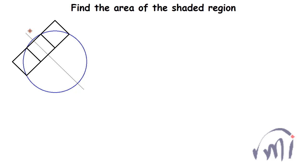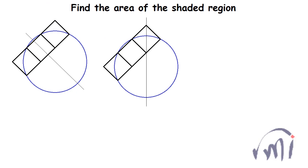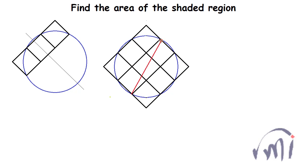We obtained the previous drawing by using the symmetry of the circle across one diameter. Similarly, using symmetry across the other diameter and then across the diagonal, we get a complete square. The diameter of the circle equals 10 units. Here we again have a right-angle triangle, and I name its vertices A, B, and C.